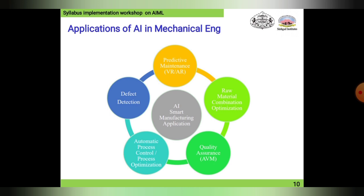And predictive maintenance is again related back to defect detection — this is how it works. It is actually a cycle that goes in loops continuously. In the manufacturing process, these are the standard checks while processing any kind of object or product, and this is a continuous process where AI can play a very important role to perform all these operations.